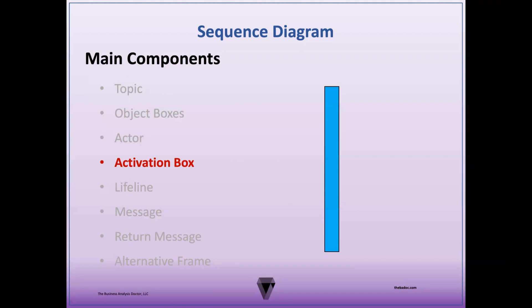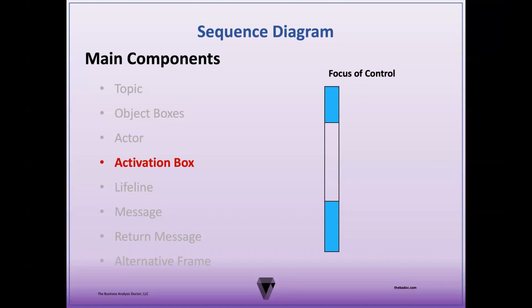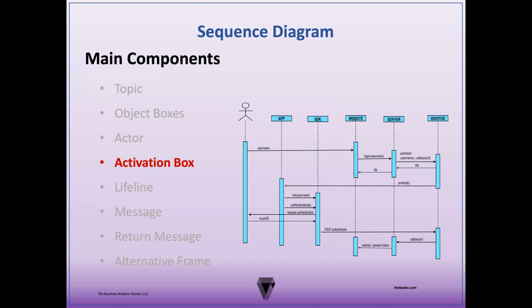An activation box represents the period during which an object becomes active and then idle in the scenario. It's illustrated by a thin vertical rectangle spanning from the start to the end of the object activity, with an initiation point and a completion point. The longer the activation box, the more time it takes for that object to be completed. An activation box also conveys the focus of control — the period during which processing is occurring, also known as the execution occurrence. The call that initiates the activation box is represented by a solid line with an arrowhead.